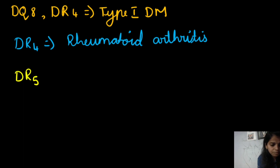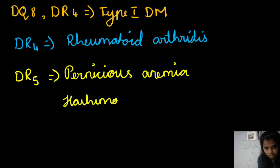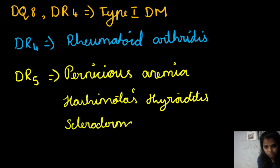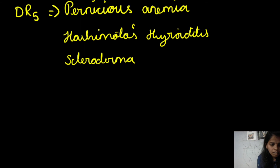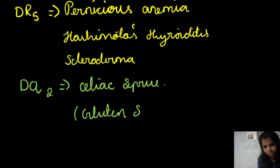HLA-DR5 is seen in pernicious anemia, where there are auto-antibodies against parietal cells in the stomach, and also in Hashimoto's thyroiditis and scleroderma (also called morphea). Finally, HLA-DQ2 is associated with celiac sprue, also called gluten-sensitive enteropathy.